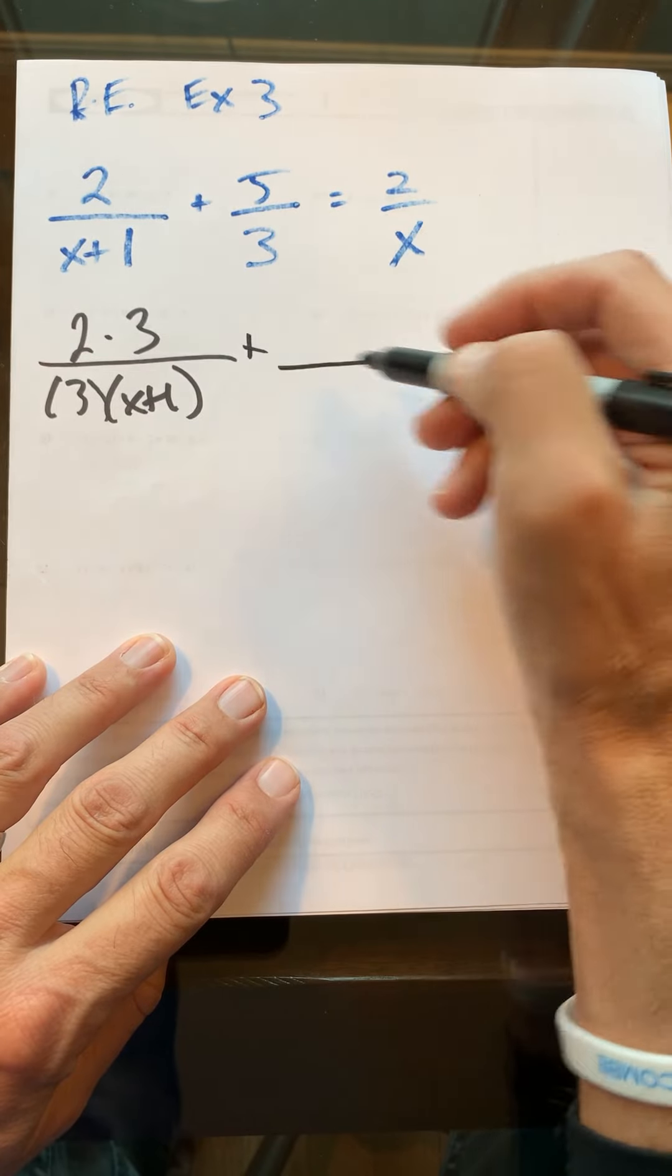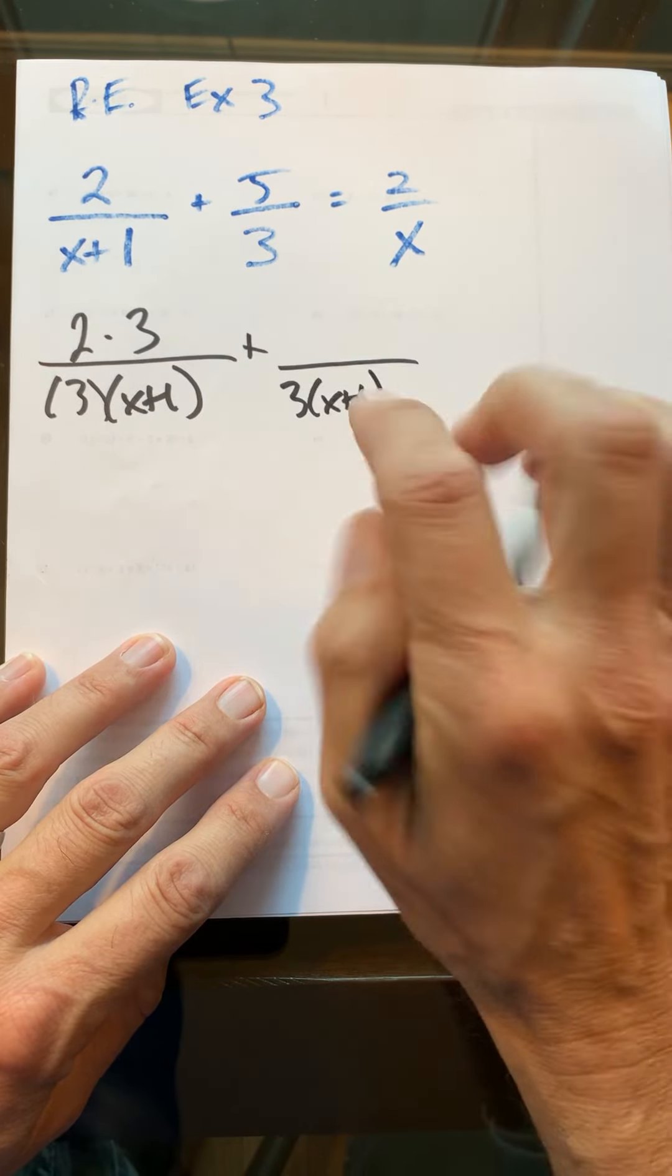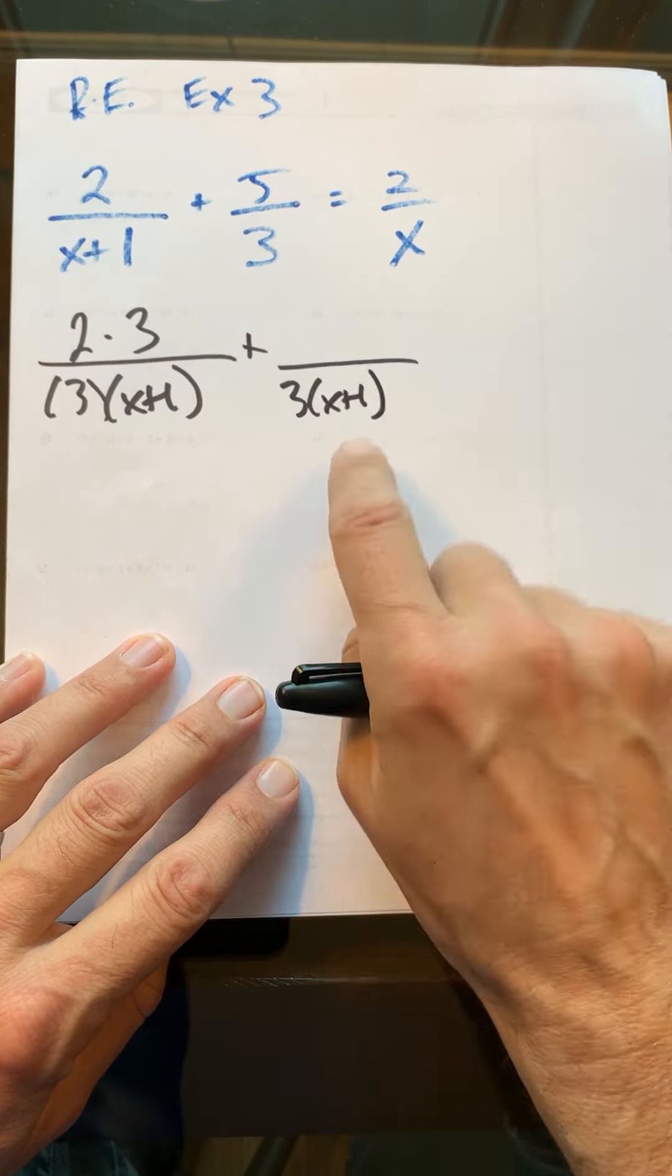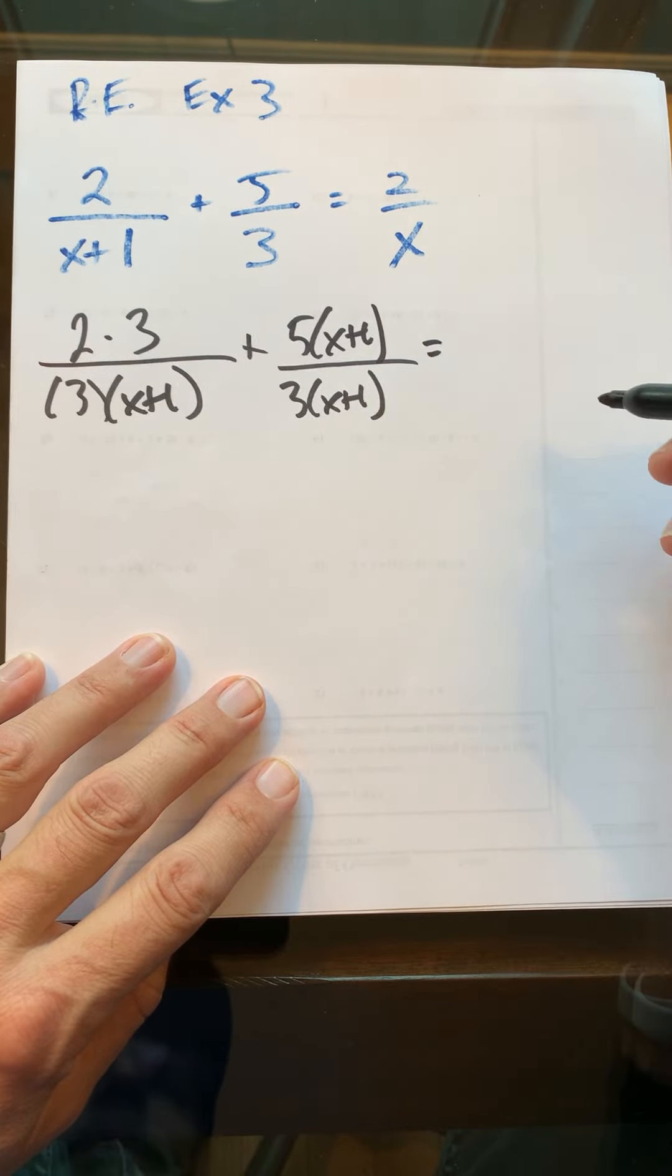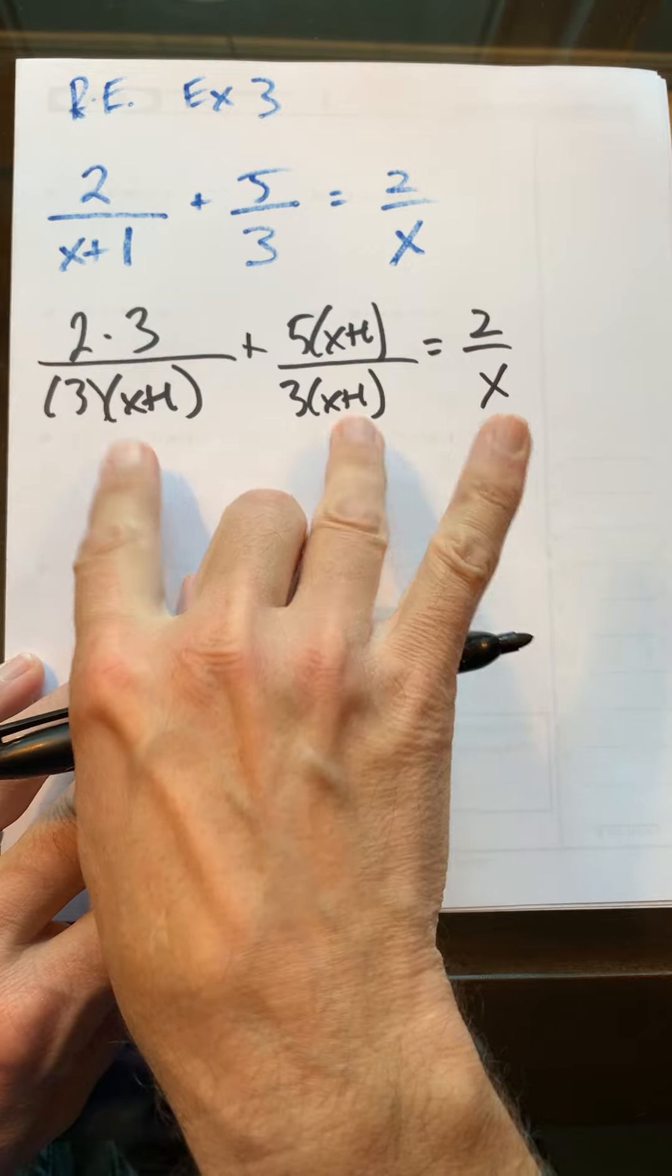For this one, I had 3, now I want 3(x+1), so obviously I've multiplied by x+1. I have to do the same thing to the top: 5(x+1), and this becomes equal to 2/x.